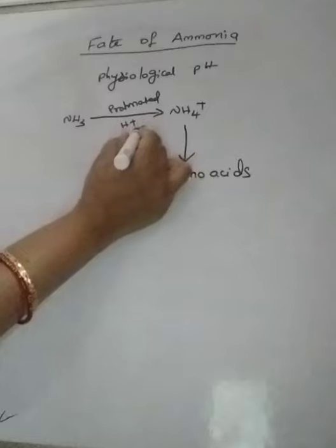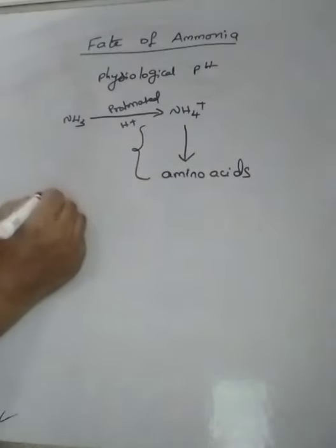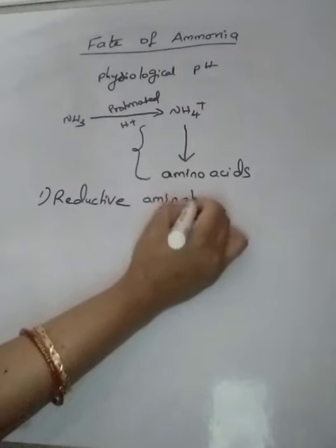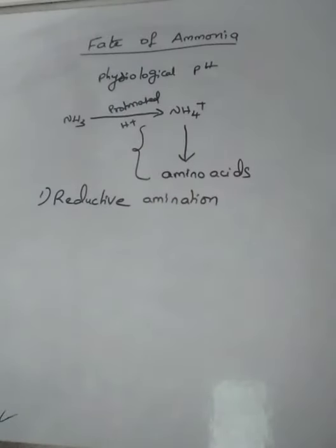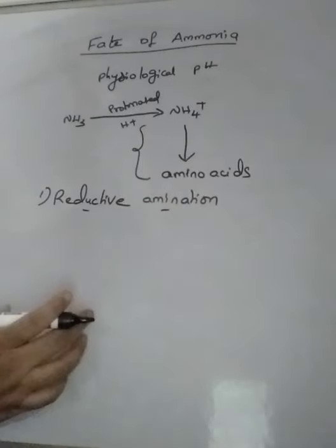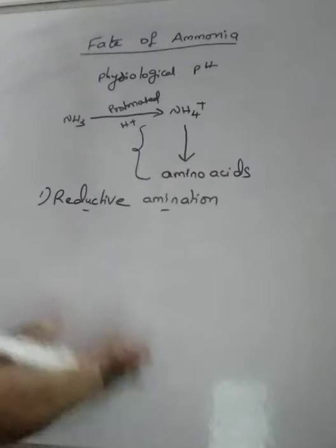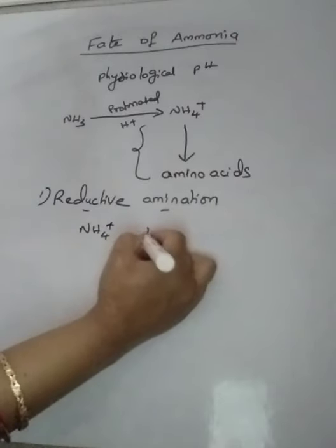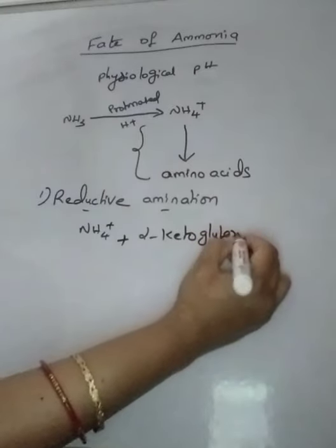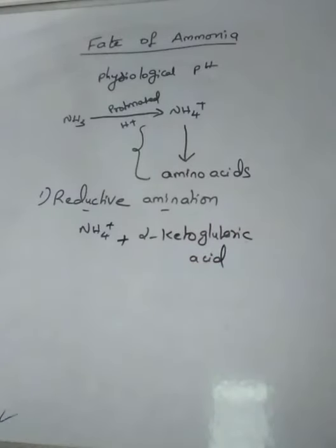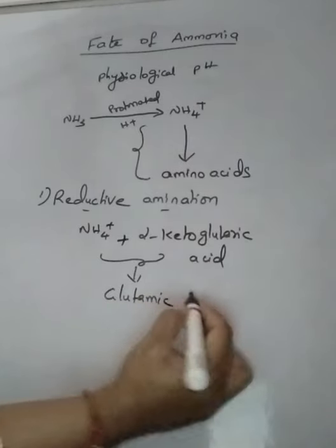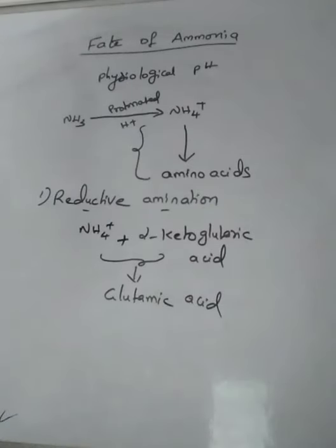This ammonium to amino acid conversion involves two steps. The first step is reductive amination. In this process, reduction — which involves dehydrogenation — takes place. The ammonium or ammonia reacts with alpha-ketoglutaric acid, which acts as a precursor. These two bind together and form the amino acid glutamic acid, which is the first amino acid synthesized.